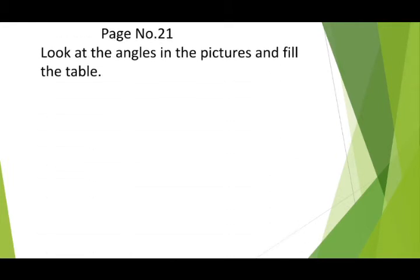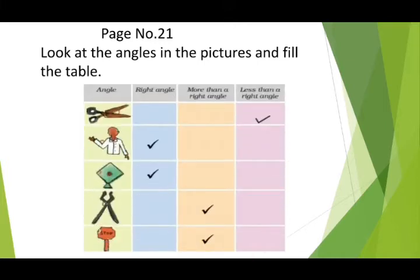In your textbook on page number 21, look at the angles in the pictures and fill the table. You have to identify which angles are right angles, which are more than a right angle, and which are less than a right angle. In a scissor, the angle is less than a right angle. In the hand picture, it is a right angle. In the kite picture, it is a right angle. The first picture shows more than a right angle, and the last picture also shows more than a right angle.